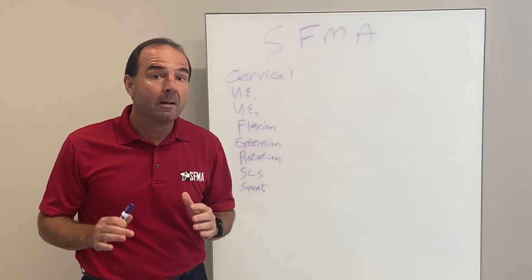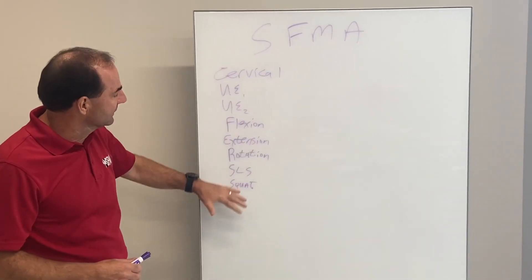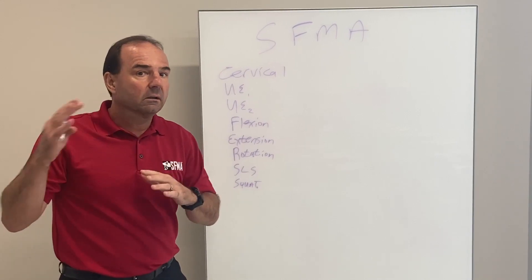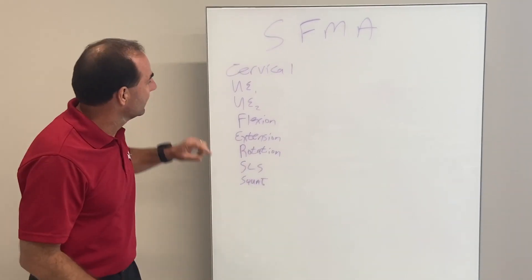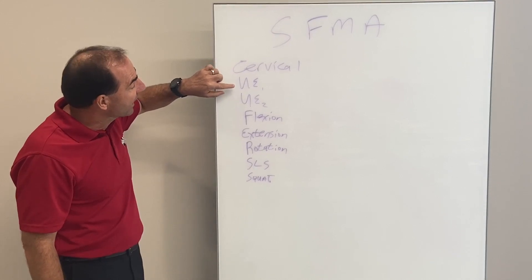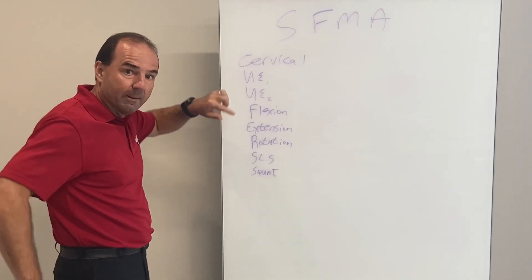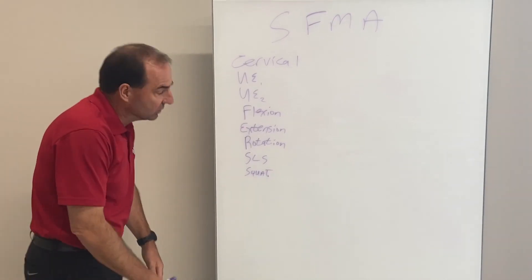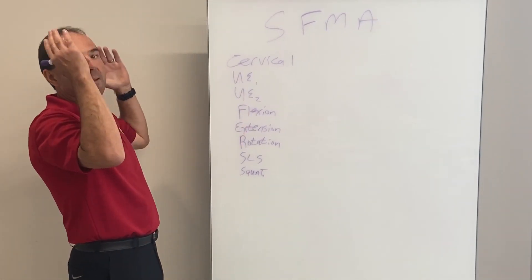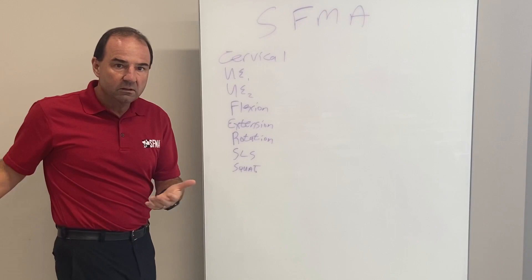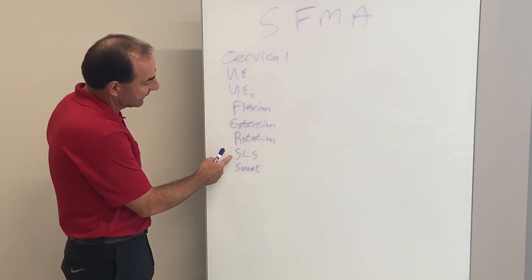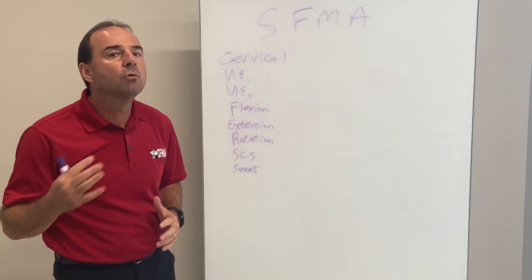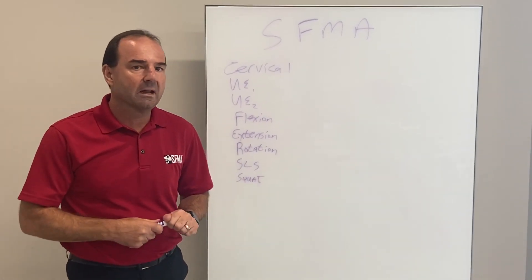The SFMA is made up of seven different top-tier patterns. We're going to clear movement throughout the body: we look at cervical spine, upper extremity patterns behind your back and over your head, composite flexion — touching your toes — extension backwards, bending, rotation, single leg stance, and squat. So we've got almost everything covered in the movements in terms of what you need for daily life.